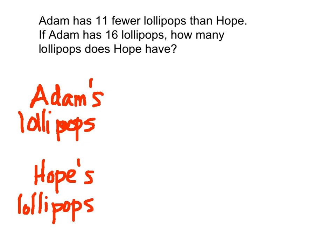Now that we've done that, we will begin to read each sentence step by step. We're going to stop whenever we see periods, question marks, or commas. Anytime we see a punctuation mark, we're going to stop and interpret that information — that means make sense of what we're reading. First: Adam has 11 fewer lollipops than Hope. Period. Stop.